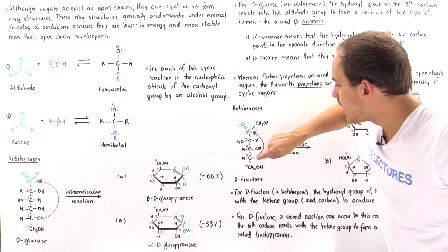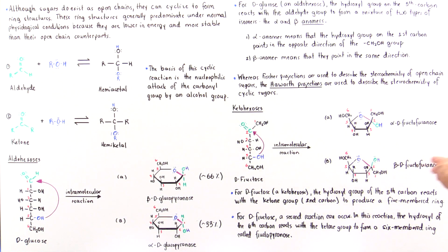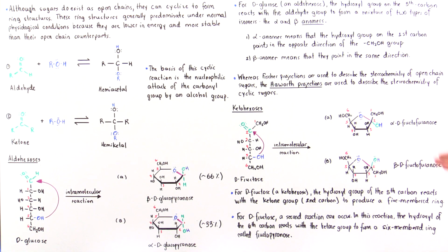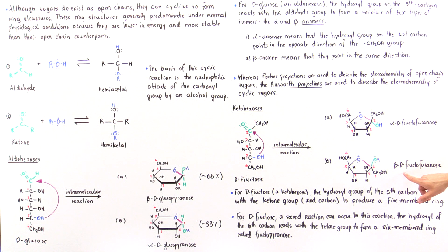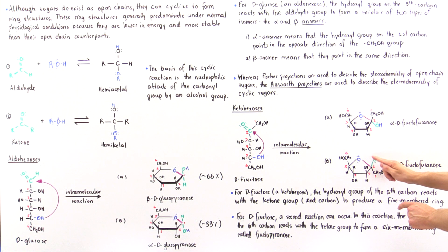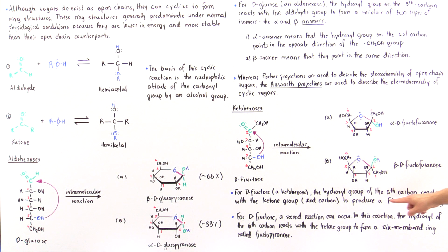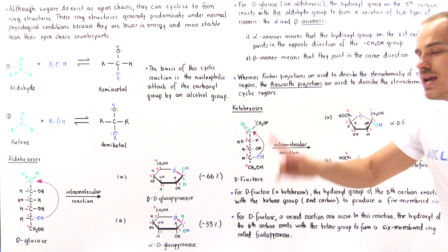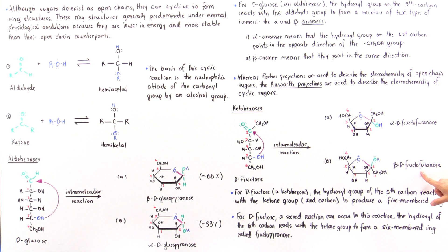The hydroxyl group on the fifth carbon will react with carbon number two — the carbon of the carbonyl that acts as the electrophile — rather than carbon one. So instead of forming a six-membered ring (a pyranose), we form a furanose, which is a five-membered ring, with five atoms and five bonds inside the ring. Just as before, we can attack from the top or the bottom, so we also form alpha and beta anomers: alpha-D-fructofuranose and beta-D-fructofuranose. In the alpha case, this group points in the opposite direction as the reference group; in the beta case, the hydroxyl points in the same direction.